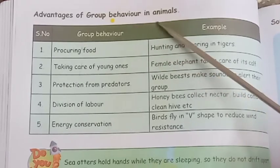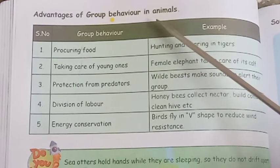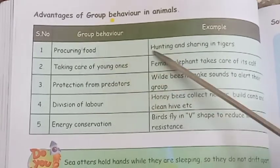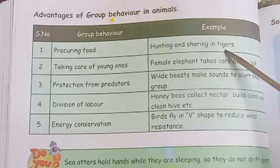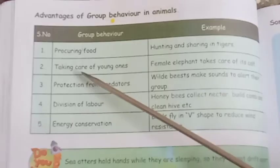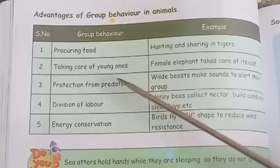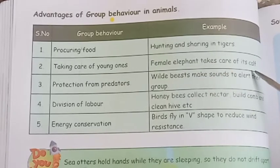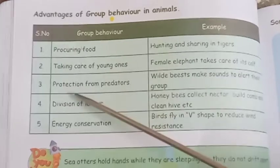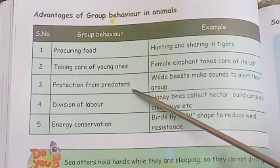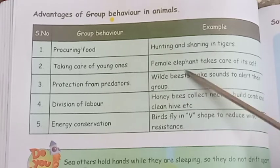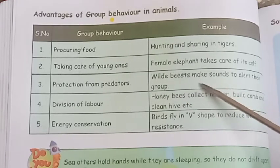Advantages of group behavior in animals: Procuring food — hunting and sharing, as seen in tigers. Taking care of young ones — for example, a mother elephant taking care of her calf. Protection from predators — wildebeest make sounds to alert the group of danger.